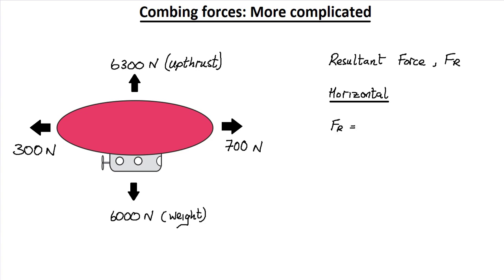The thrust of 700 newtons is acting to the right, so that's a positive force, whereas the air resistance is acting to the left, and that will be a negative force. So we have 700 newtons minus 300 newtons, giving a resultant force in the horizontal direction of 400 newtons — that's positive, meaning it's acting to the right.